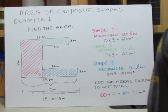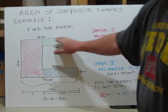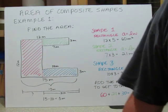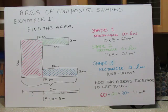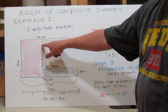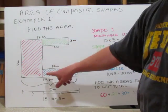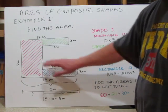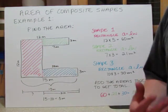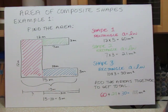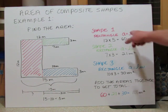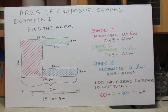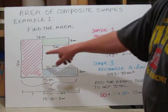We're going to look at a couple of examples. First, we need to find the area of this shape. I've divided it into simpler, smaller shapes by drawing dotted lines to create three rectangles. I have to find the area of each one, then add them together for the total area. For shape one, the area of a rectangle is length times width, or base times height.